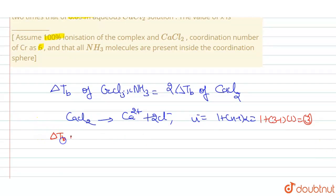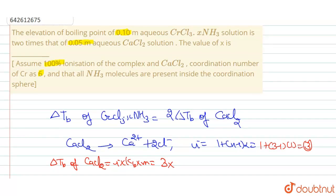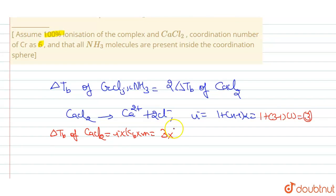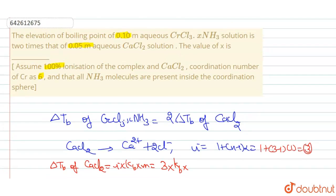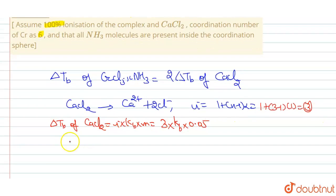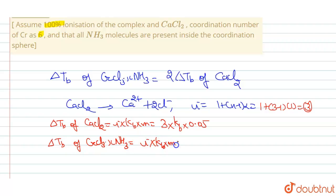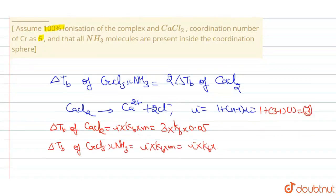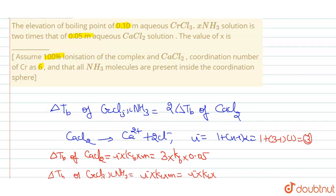So ΔTb of CaCl₂ = i × Kb × m = 3 × Kb × 0.05. For the aqueous solution, we use Kb of water. Now we need to find ΔTb for CrCl₃·xNH₃. That equals i × Kb × m, where the molality here is 0.10.